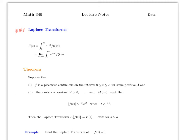The Laplace transform of a function f(t) is defined as the improper integral from 0 to infinity of the function times e^(-st). This is called the kernel. If this limit exists, then the Laplace transform exists. Notice that the original function f(t) depends on t, and once you transform it, you get a function that depends on s.